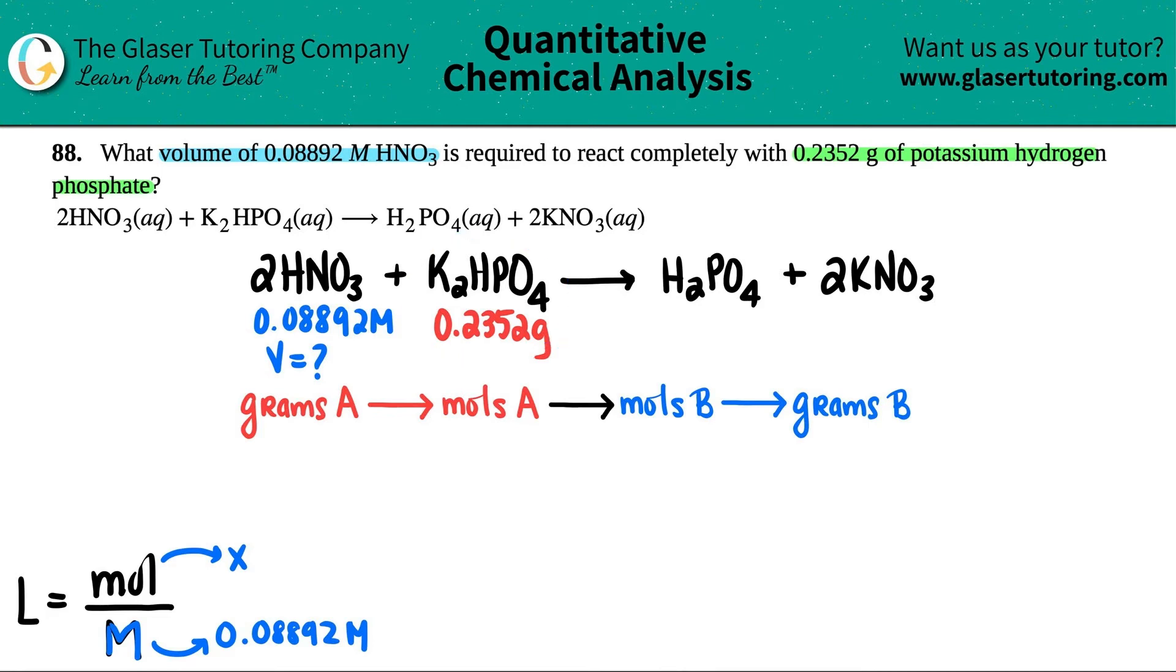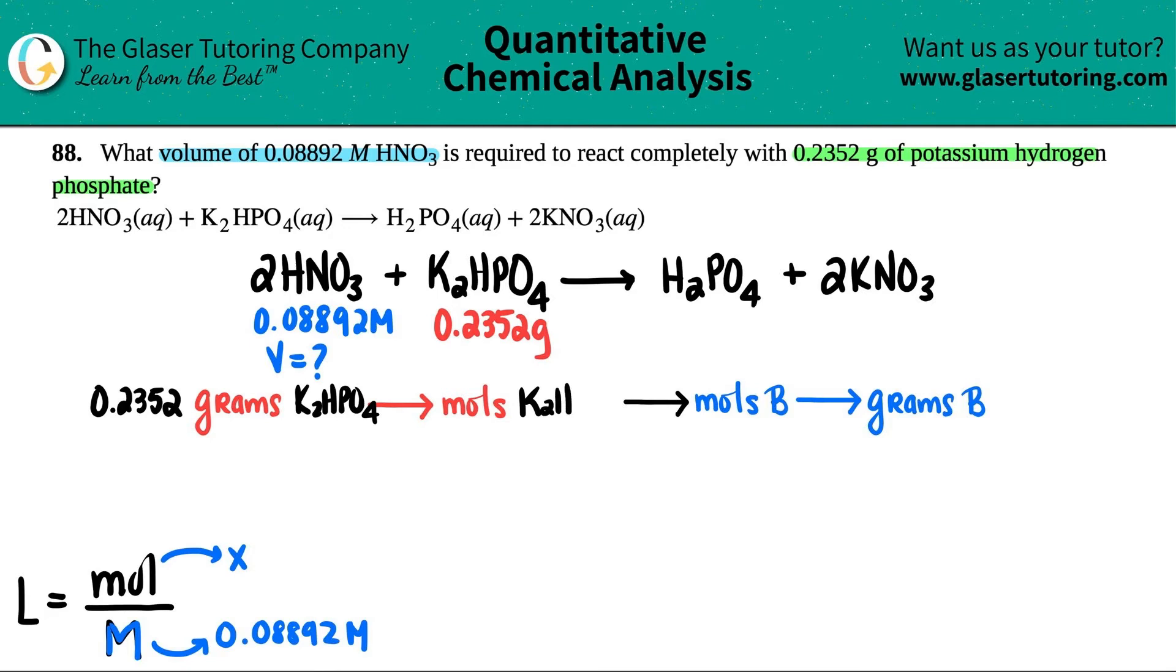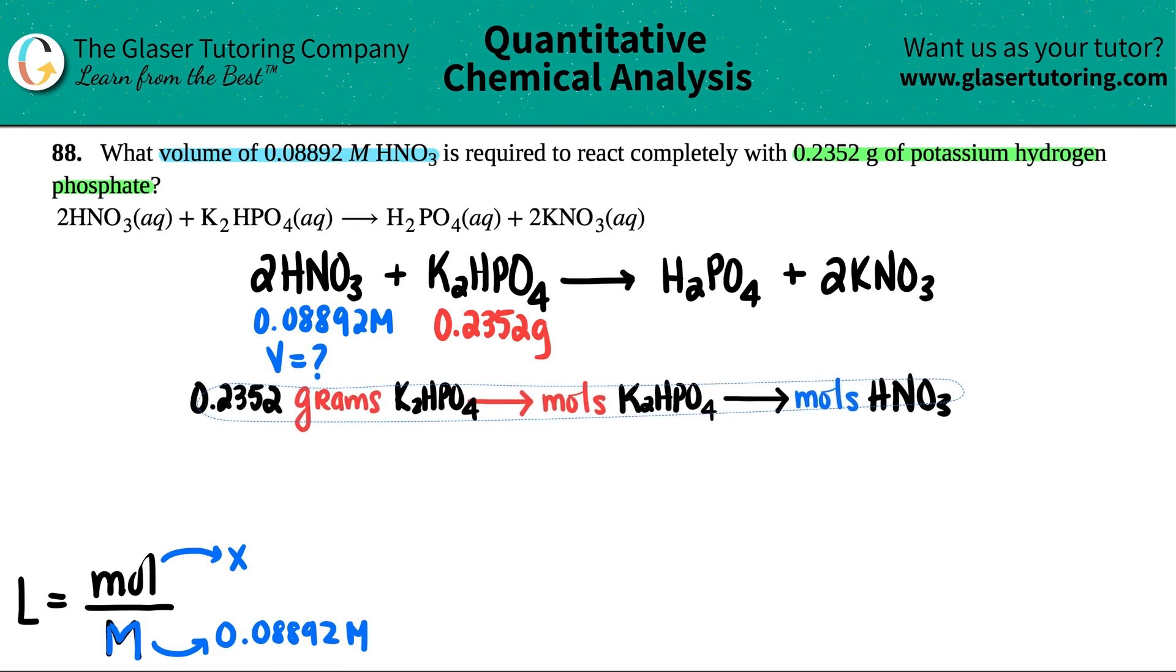Now we just need to find out the moles of the compound that we want. This is the starting material. So I'm going to say that we're going to start with 0.2352 grams of, not A anymore, but of that potassium hydrogen phosphate. I'm just giving myself a little room. K2HPO4. From there, I could get moles of that compound K2HPO4. And then from there, I can convert to moles of HNO3. In this case, I don't even need the grams of HNO3 because I'm only looking for the moles. So I can stop right at this level right here. And there is our catered flow chart for this problem. So let's give it a shot.